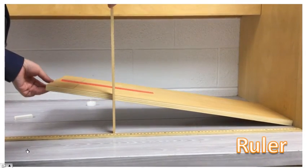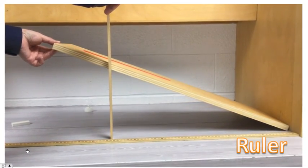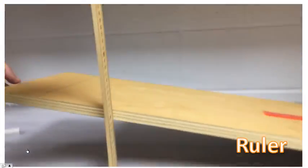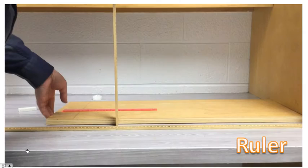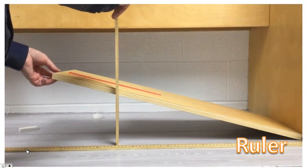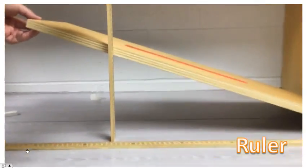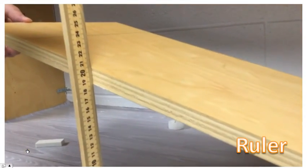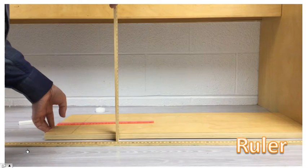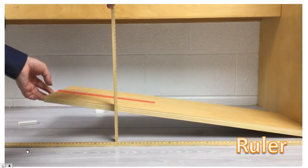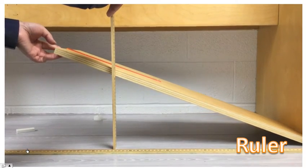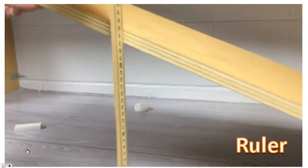And here's the ruler. There's the first distance y. Second distance y. And the final distance y.